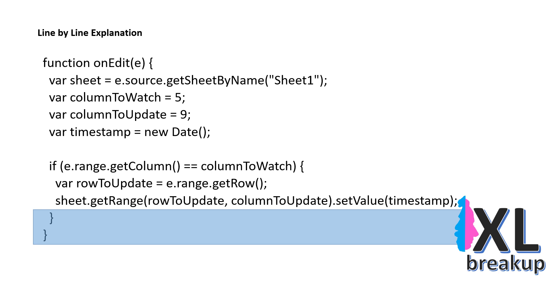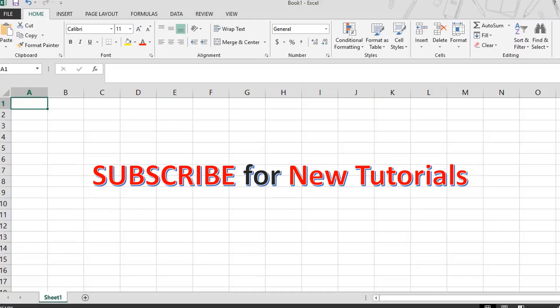So the script will check if the column that was modified is the one that we want to watch for changes, Column E. If it is, it will get the current timestamp and write it to the corresponding cell in Column I.